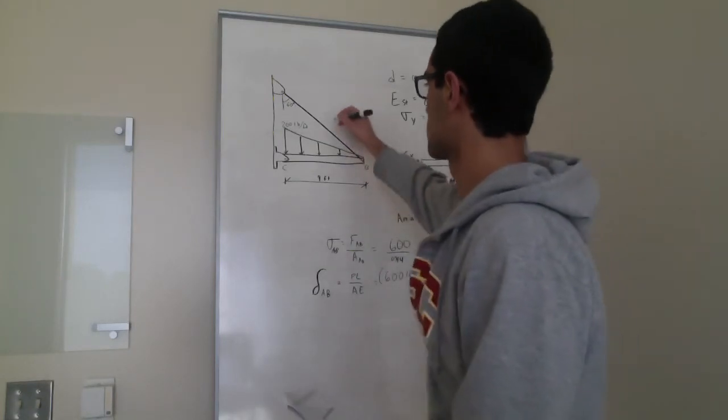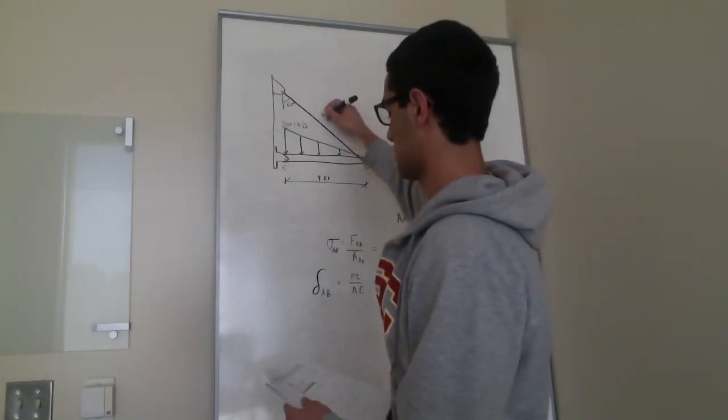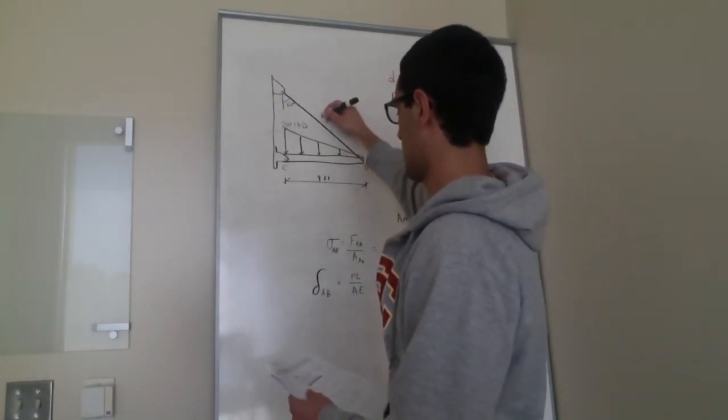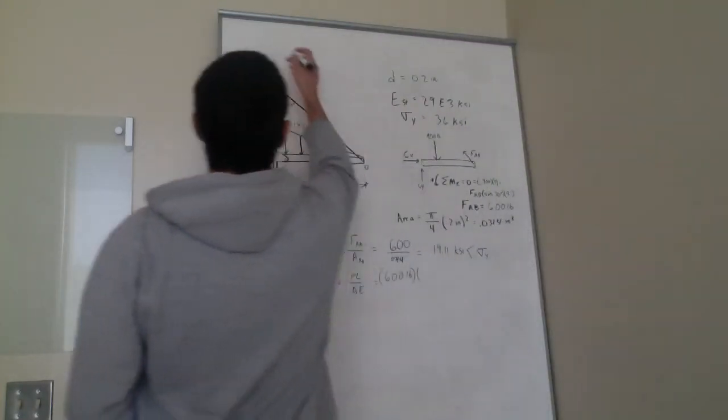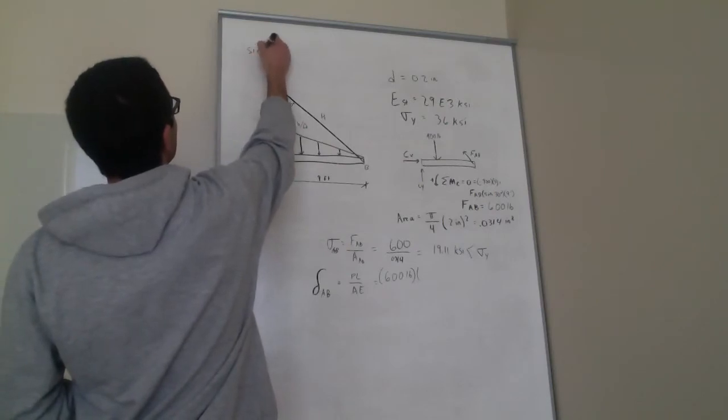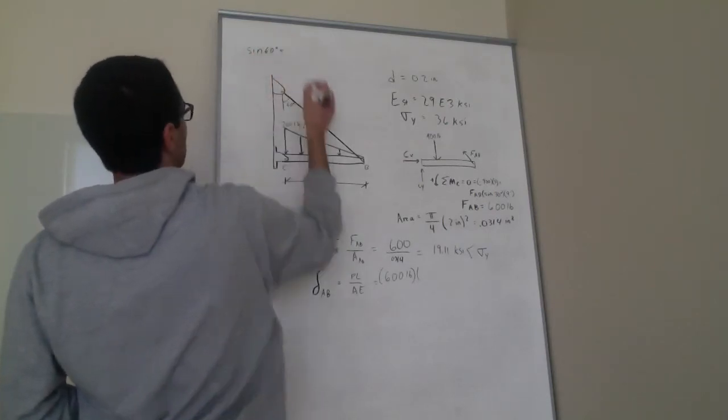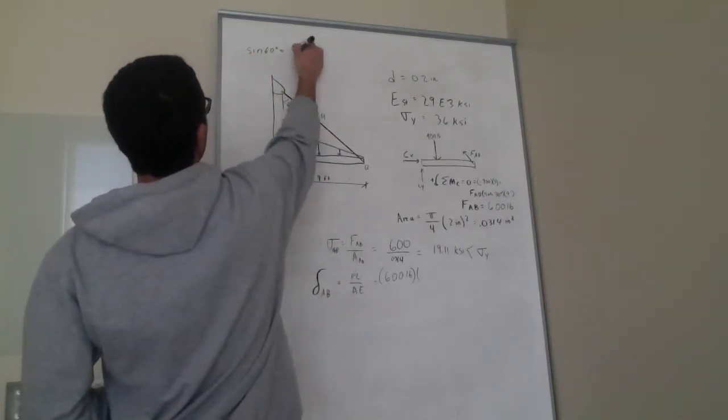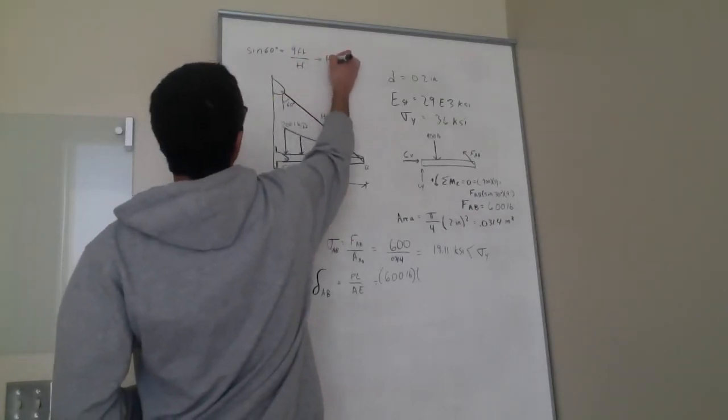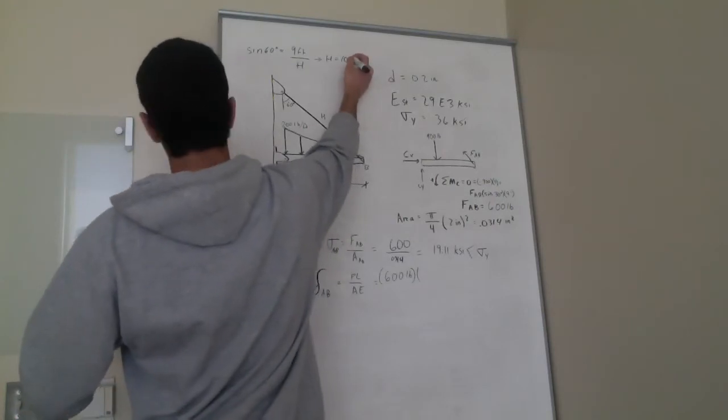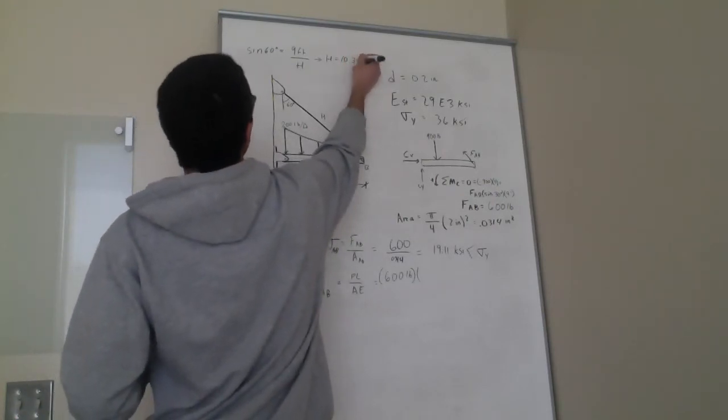One way we can do that is label this as H. You can say sine of 60 degrees equals opposite 9 feet over hypotenuse of H. H equals 10.39 feet.